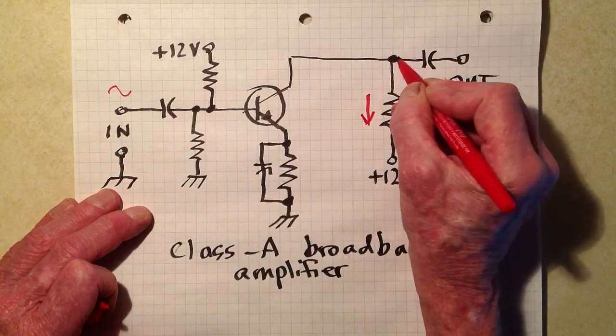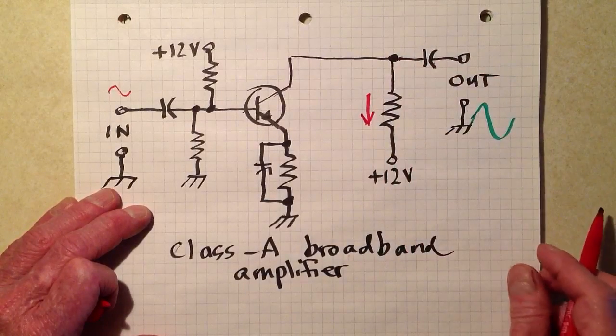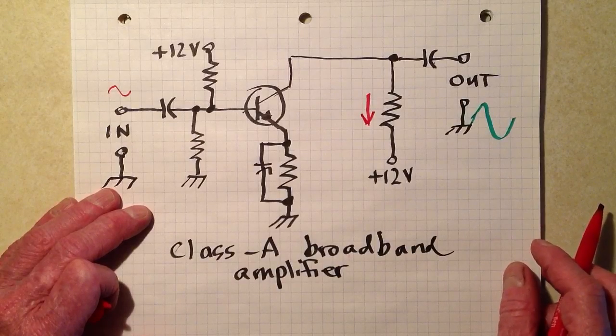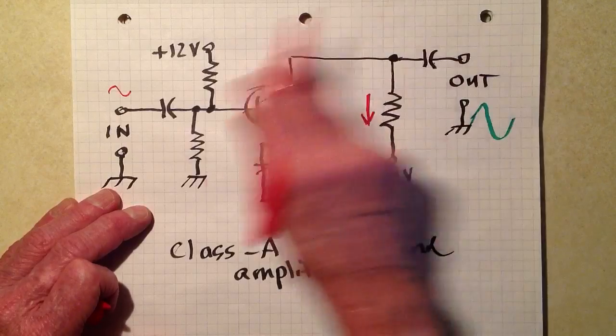Actually the electrons always flow down in this particular diagram, but they flow to a greater or lesser extent. So what we get here actually is a varying direct current. This blocking capacitor gets rid of the direct current component, leaving only the alternating current signal at the output.